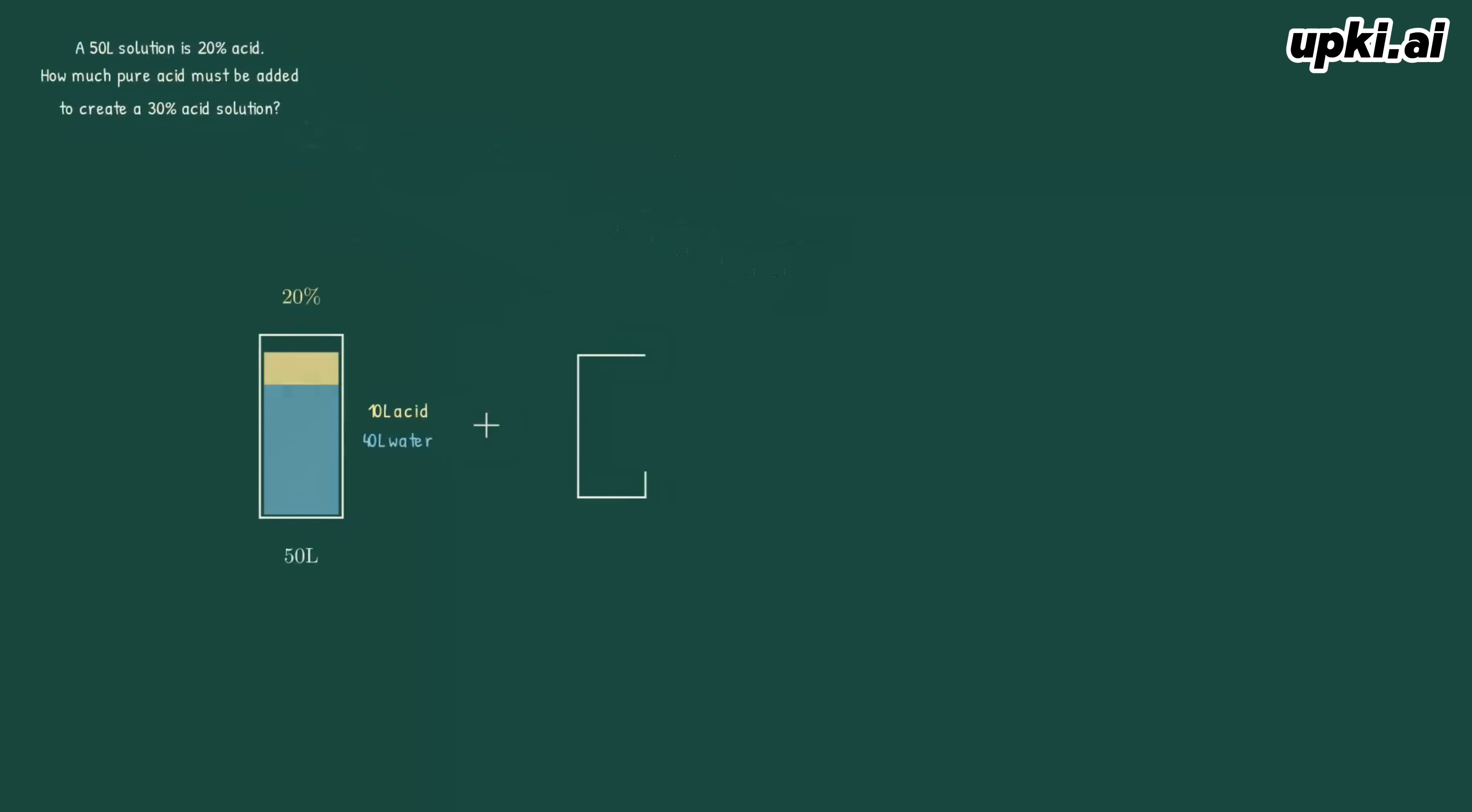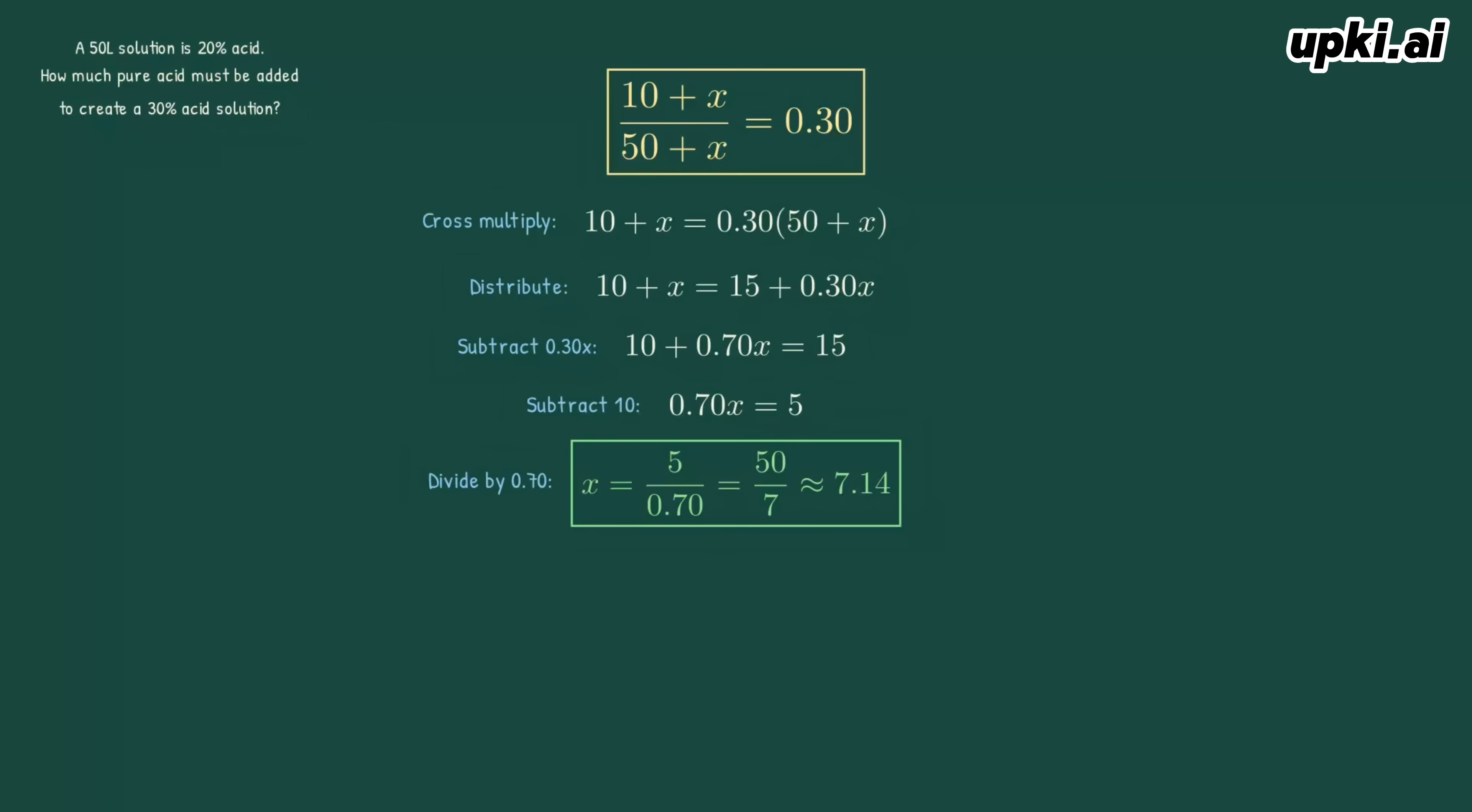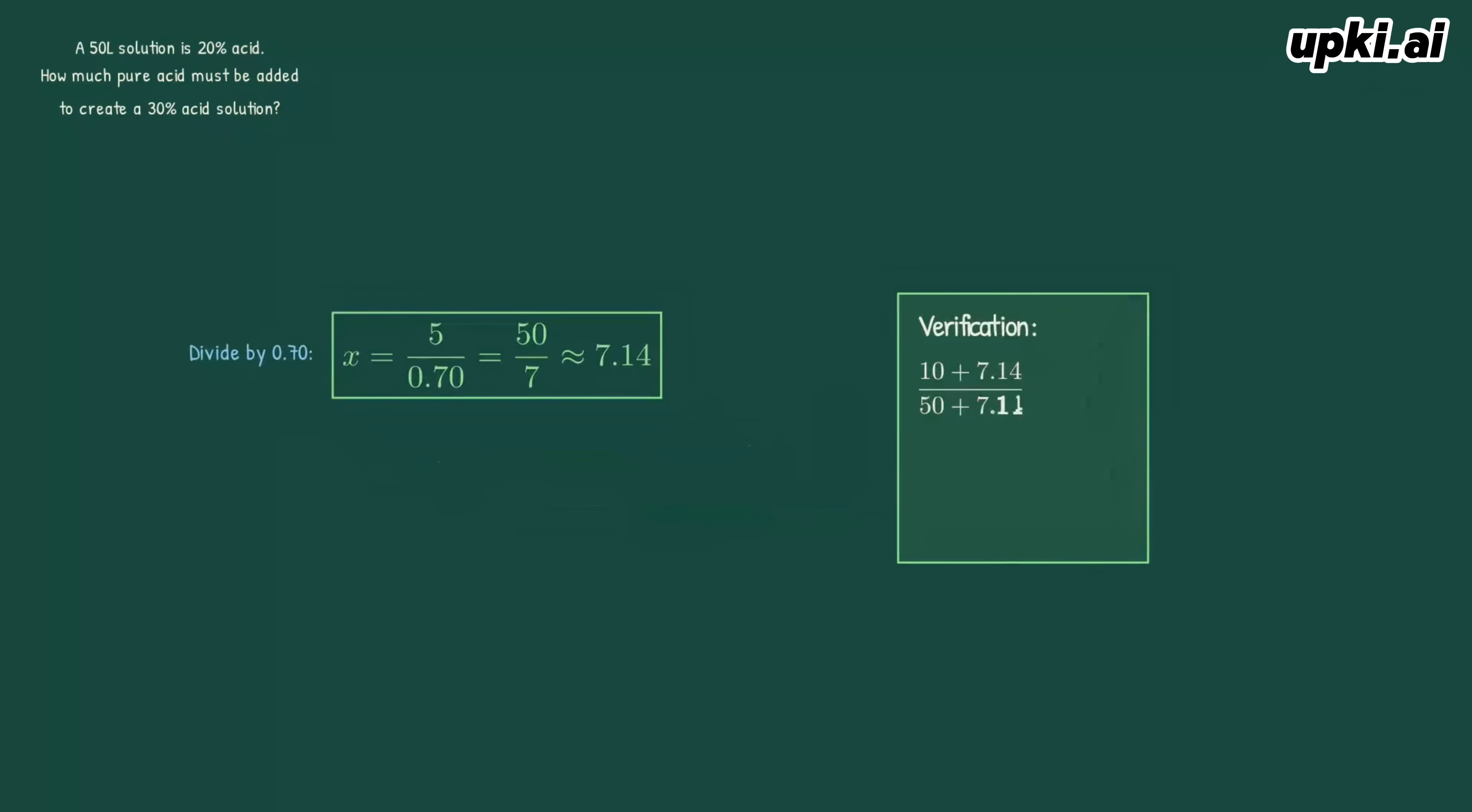Our initial solution is 50 liters at 20% acid, which means 10 liters of acid and 40 liters of water. 7.14 liters. Let's verify. If we add 7.14 liters, total acid is 17.14 liters, total volume is 57.14 liters. That's approximately 0.30 or 30%. Correct.